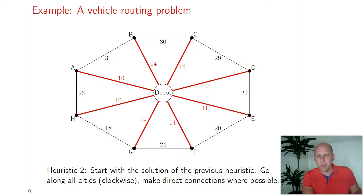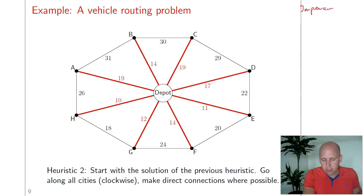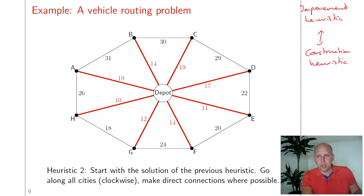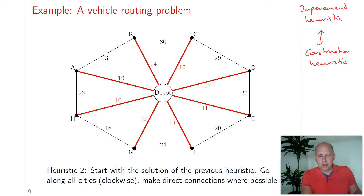The second heuristic starts with the solution of the previous heuristic, making it an improvement heuristic, because it can be used when we already have a solution. The first heuristic was a construction heuristic, because it constructs a solution from scratch. Now that we have a solution, we can apply the improvement heuristic to find a better one. We check all cities in clockwise direction and make a direct connection if that's possible. The only important thing is that we get a feasible solution.